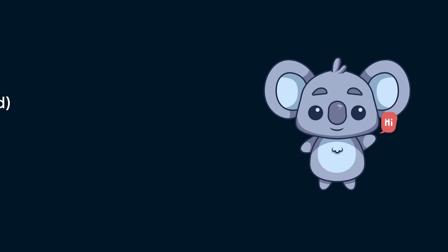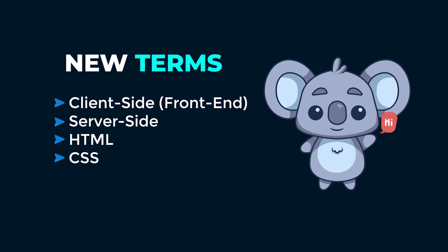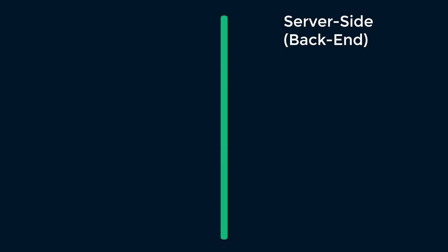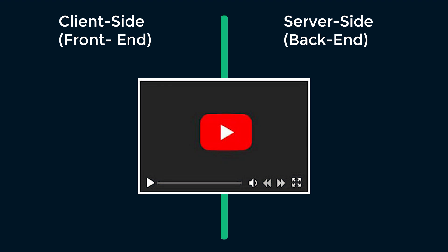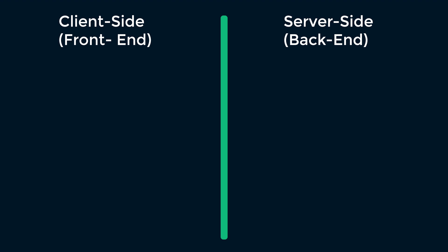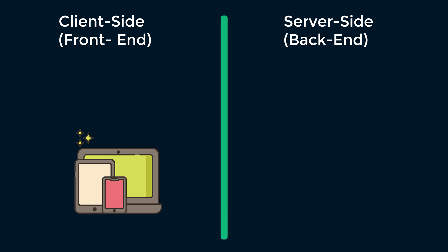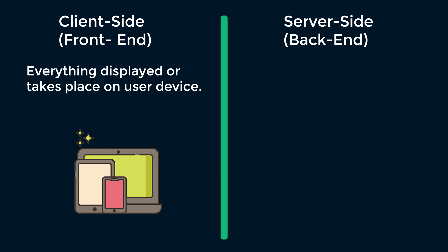Now let's get familiar with the terms frontend or client-side, server-side, HTML and CSS. After that, we can discuss what JavaScript does in practice. When it comes to a web application, there are two main sides: server-side and client-side, or frontend. For example, you are watching this YouTube video from your computer, mobile, or any other device — everything happening on your device is called client-side or frontend.